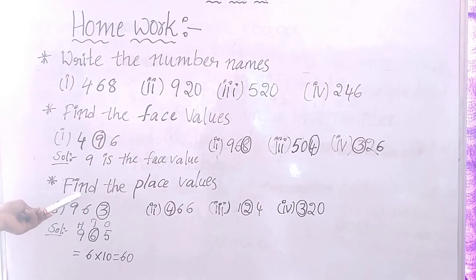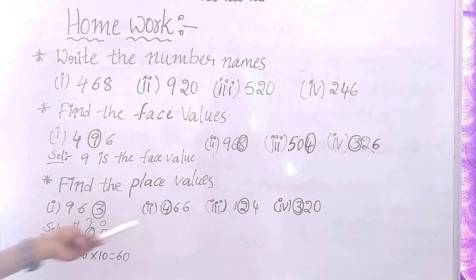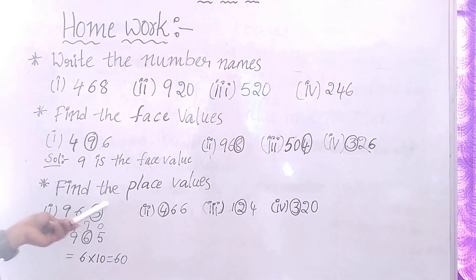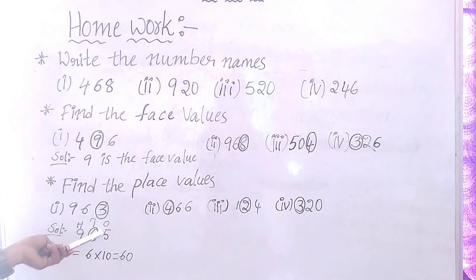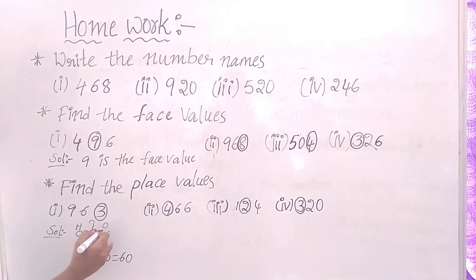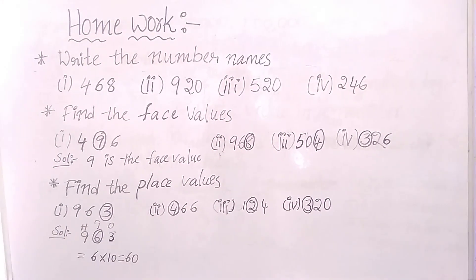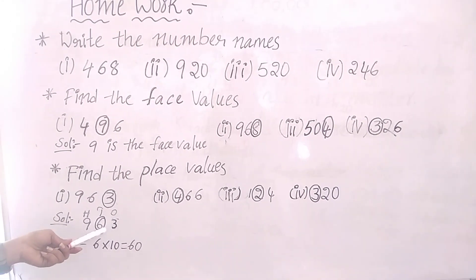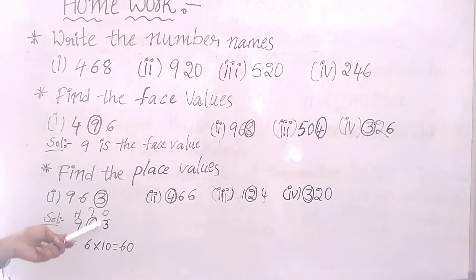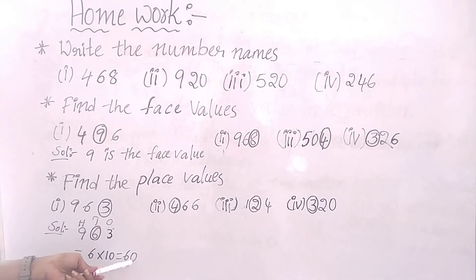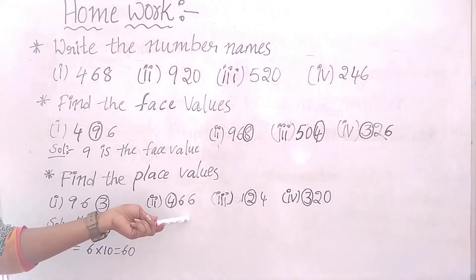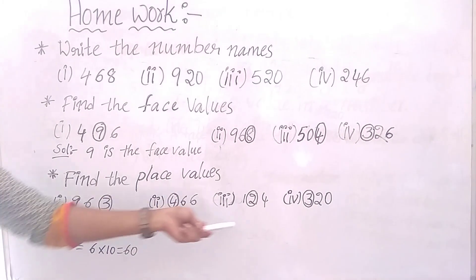Write these questions also. Next, find the place value of all these numbers. Here 9, 6, 3. First, find the place values: 3 in 1's place, 6 in 10's place, 9 in 100's place. 6 is in 10's place, so 6 into 10 equals 60. Here 4 is in 100's place, so 4 into 100 equals 400. Like that, do all the sums.